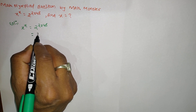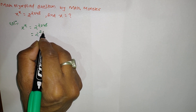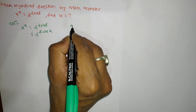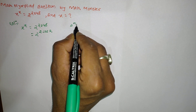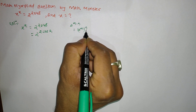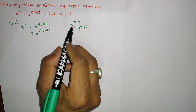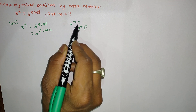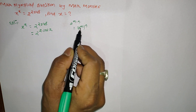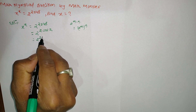We can write 2^2048 as 2^(2 × 1024). According to the power rule, a^(m×n) can be written as (a^m)^n. So here, 2^(2 × 1024) becomes (2^2)^1024, which gives us 4^1024.